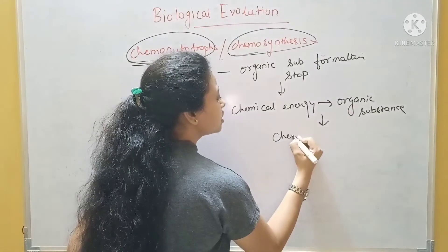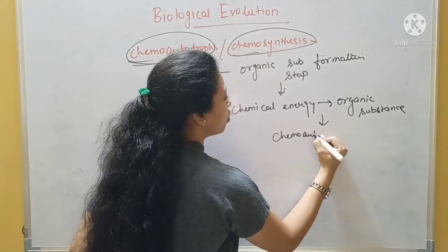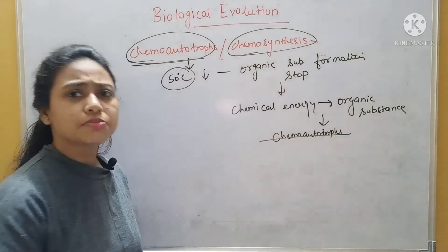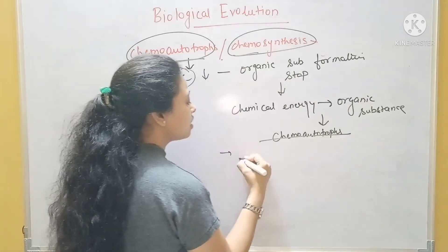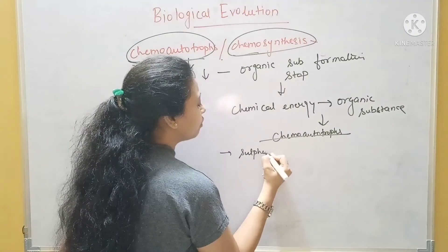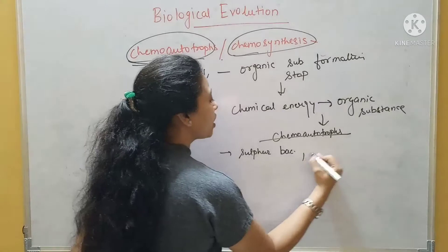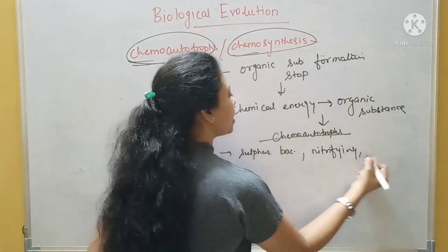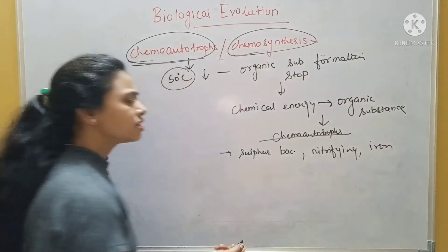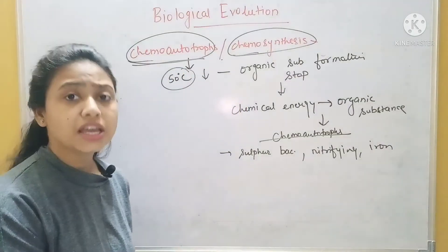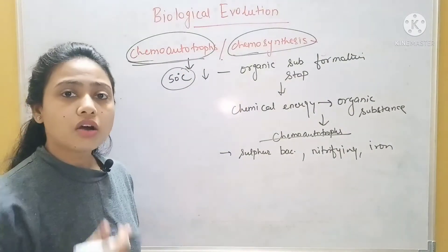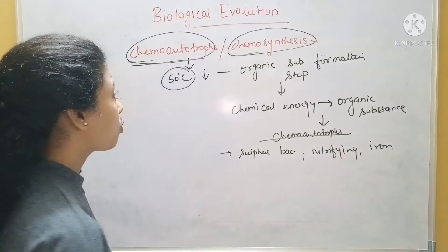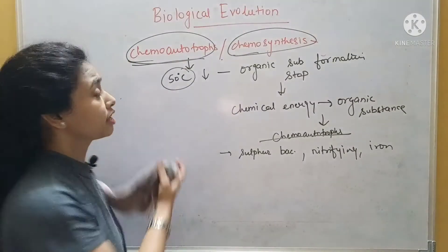This process is called chemosynthesis, and the organisms which perform this process are called chemo autotrophs. 'Auto' means to create yourself, but using chemical energy — that's why they are called chemo autotrophs. Examples we study today include sulfur bacteria, nitrifying bacteria, and iron bacteria — they all use chemical energy to create organic substances.